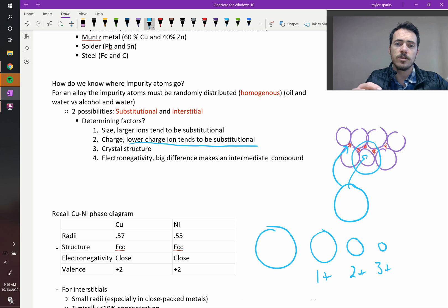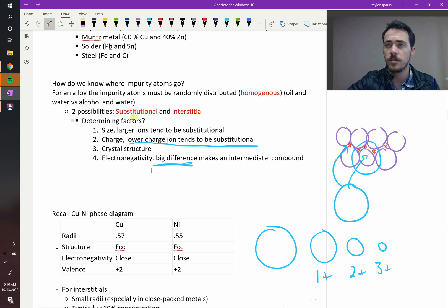Electronegativity: if there's a really big difference in the electronegativity, meaning that you have elements from the different corners of the periodic table, it's less likely that they're going to substitute, and it's more likely that they're going to instead form an intermediate compound. Those things are going to react with one another. We know that the larger difference in electronegativity leads to higher ionic bonding, and so that's going to just be more likely that it forms a bond instead of substituting interstitially or as a substitution.